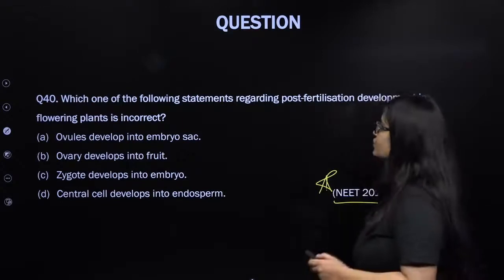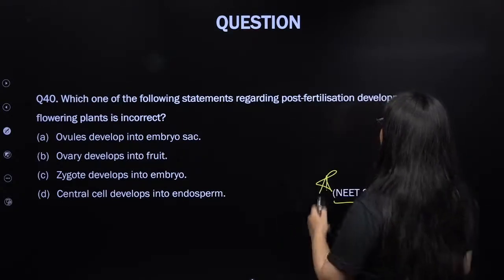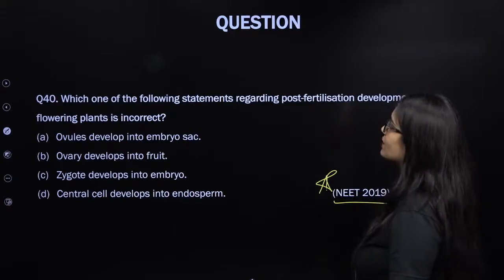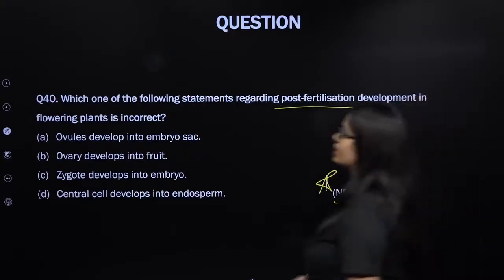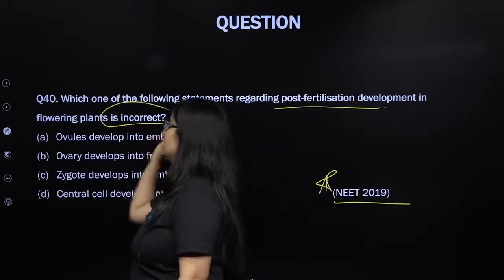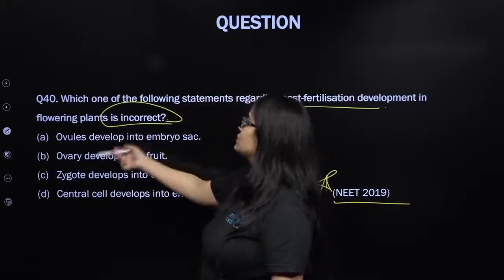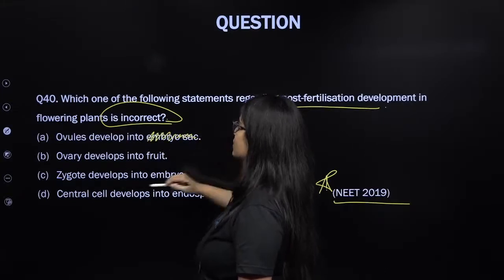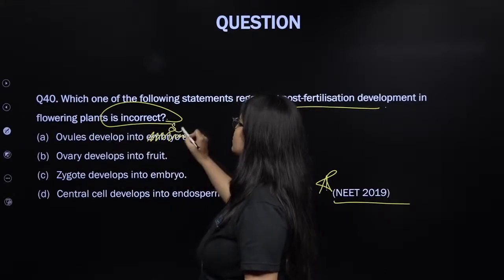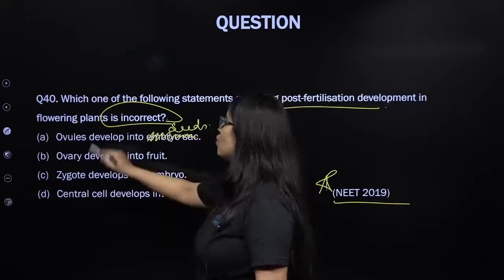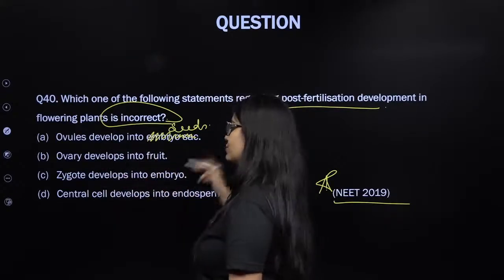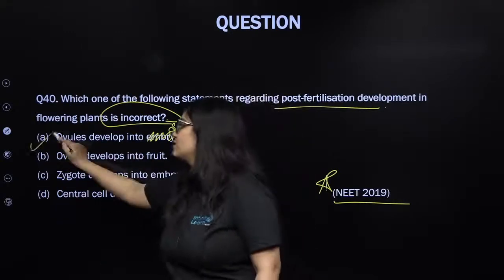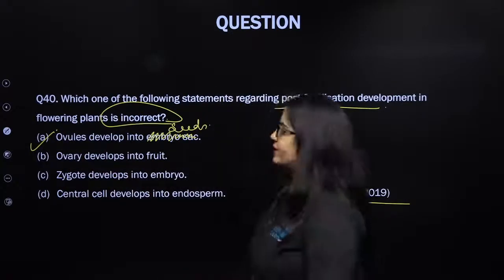From NEET 2019: which statement regarding post-fertilization development in flowering plants is incorrect? Ovules develop into embryo sac — NO, embryo sac is a pre-fertilization structure; ovules develop into seeds. Ovary develops into fruit — correct. Zygote develops into embryo — correct. Central cell develops into endosperm — correct. So only option A is wrong.